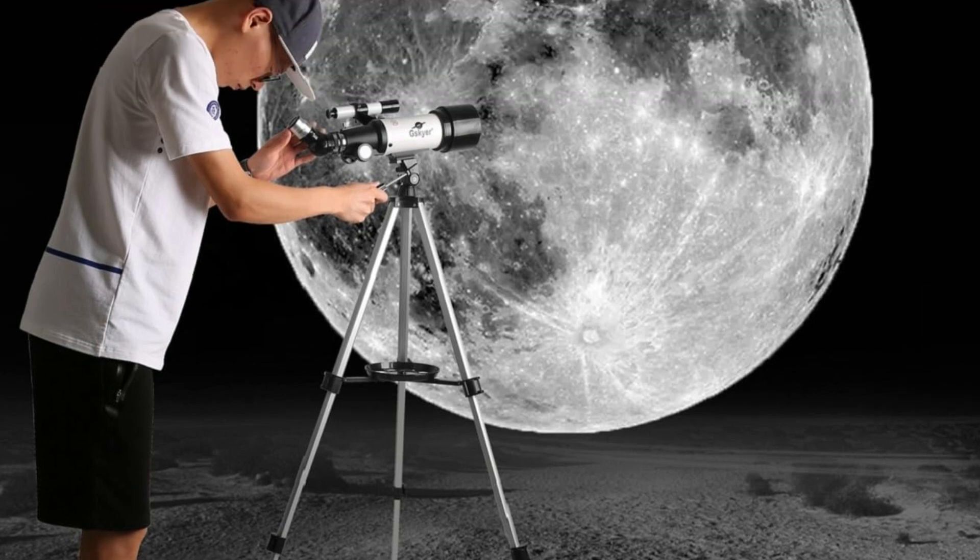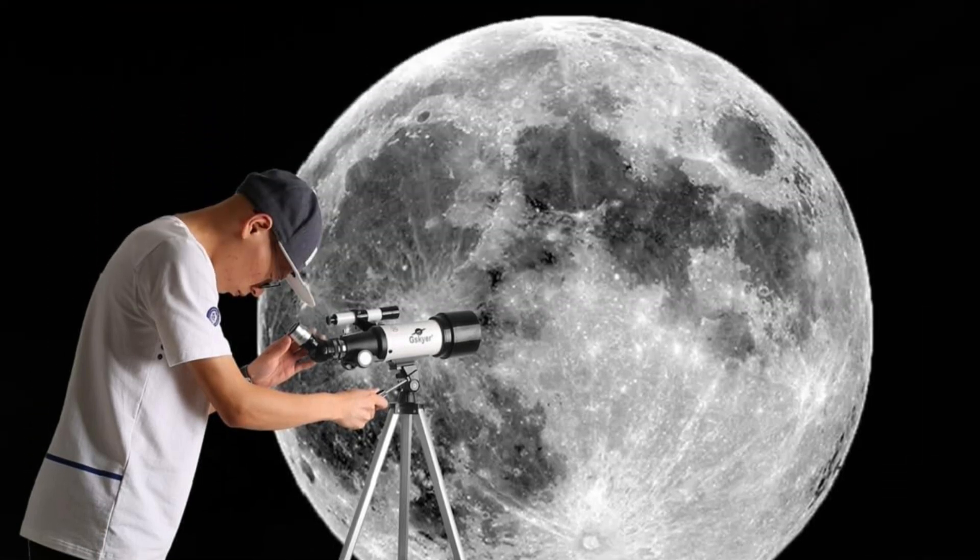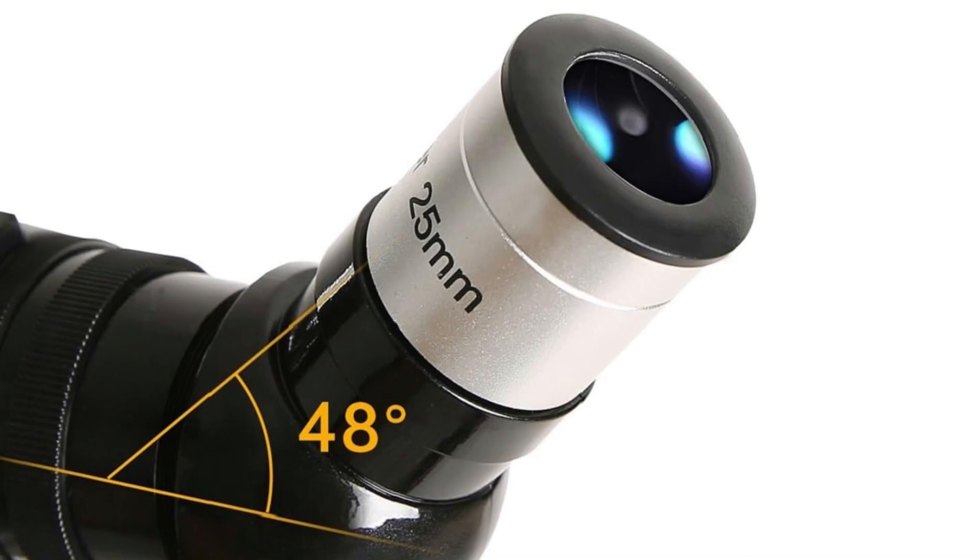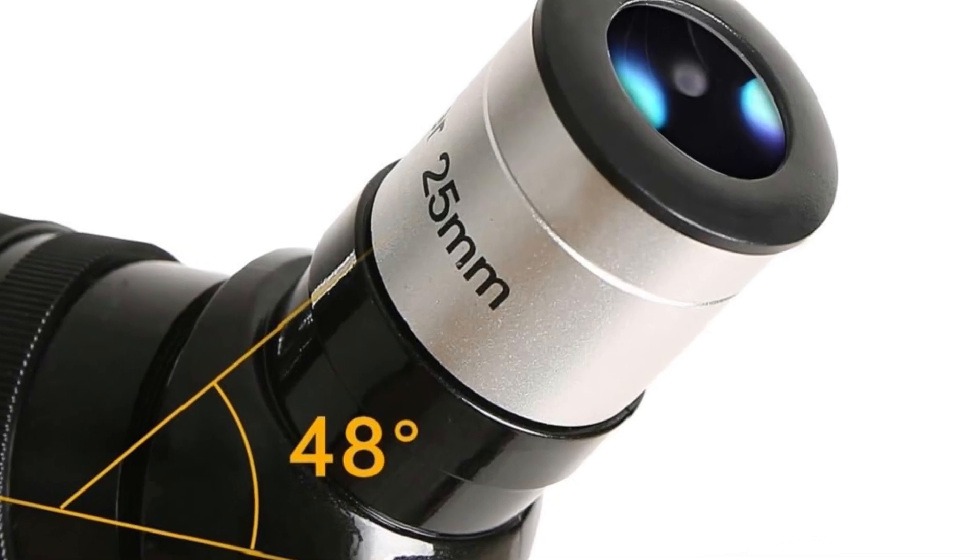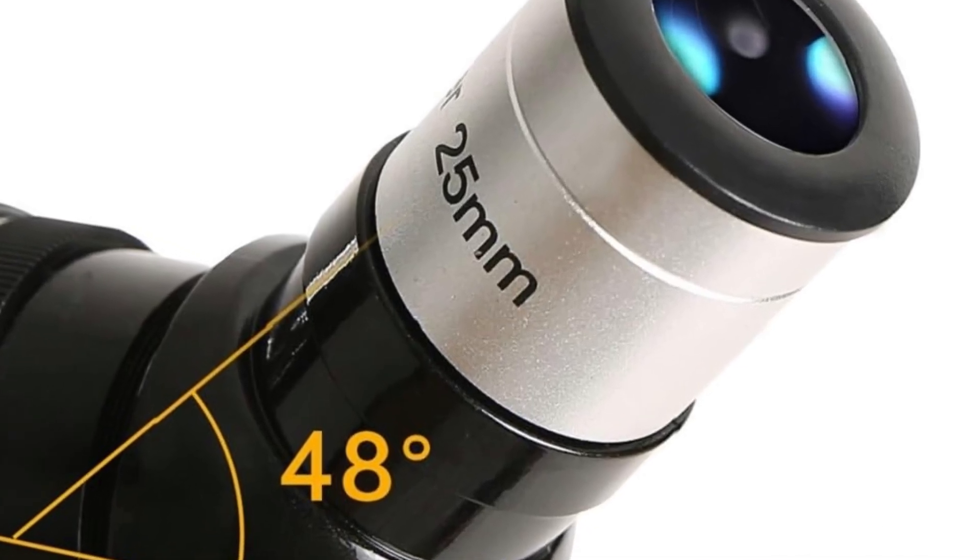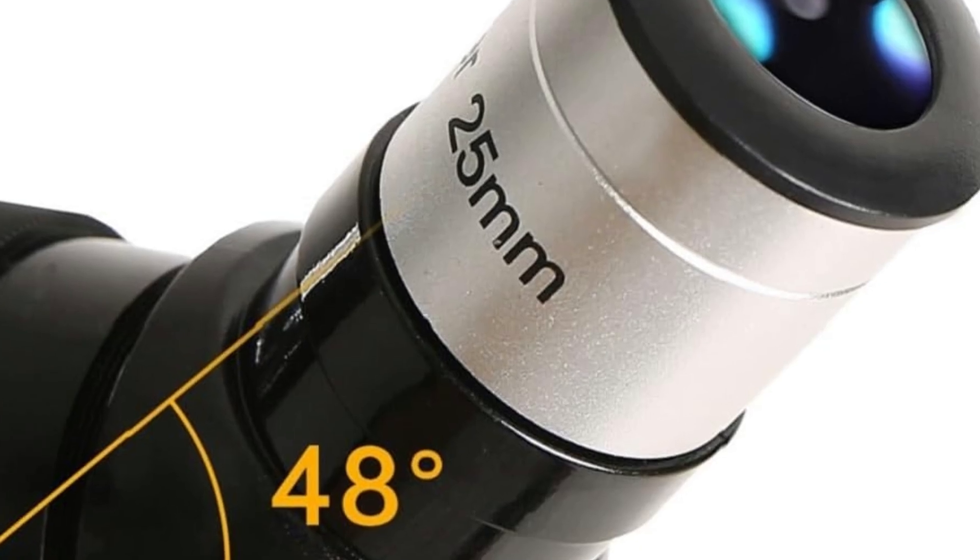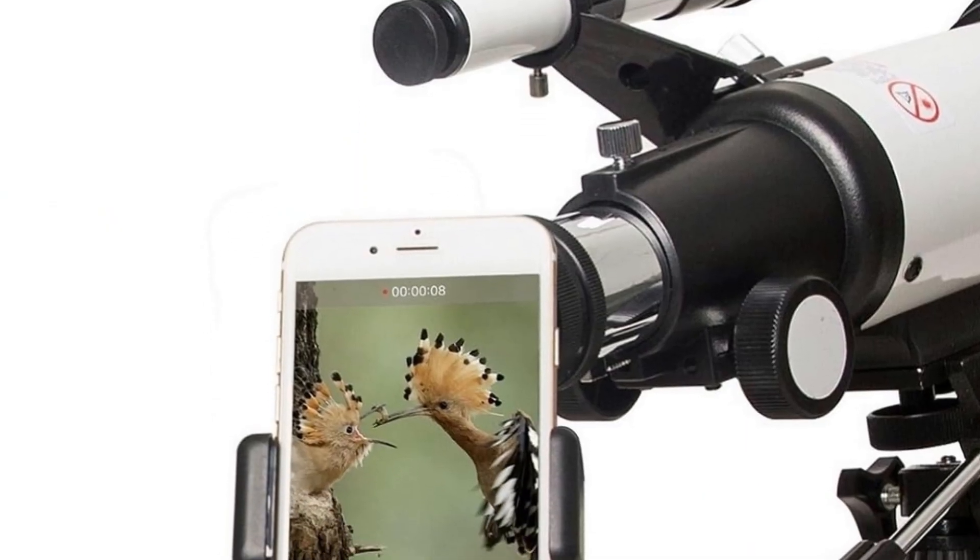Magnification. Come with two replaceable eyepieces and one 3x Barlow Lens. 3x Barlow Lens Trebles the Magnifying Power of Each Eyepiece. 5x24 Finder Scope with Mounting Bracket and Cross Hair Lines Inside Make Locating Objects Easily.